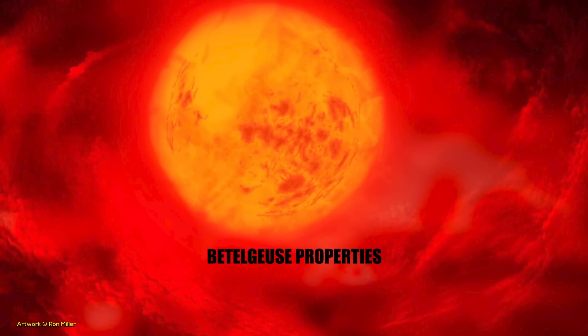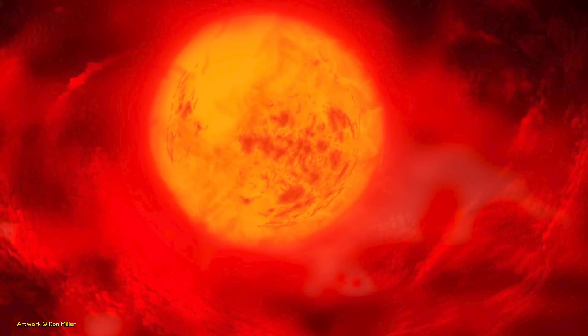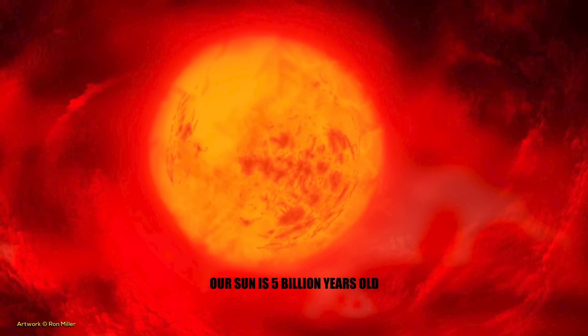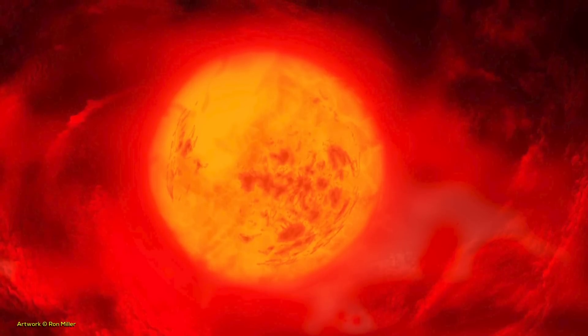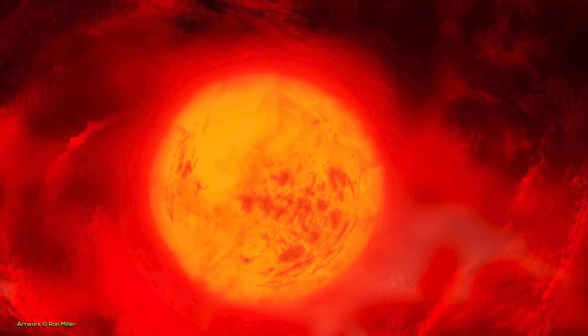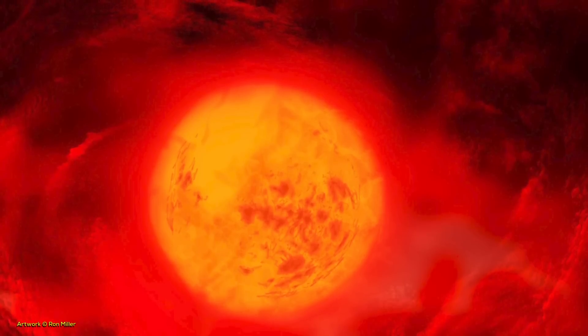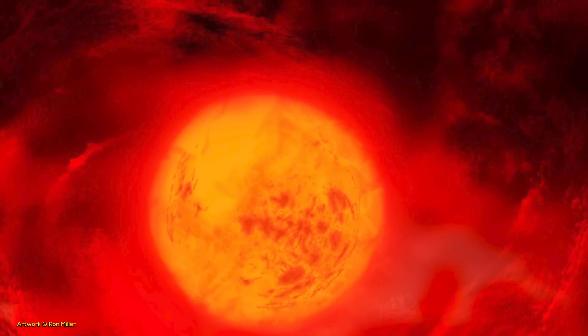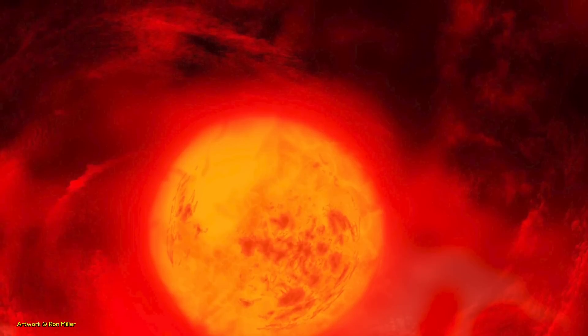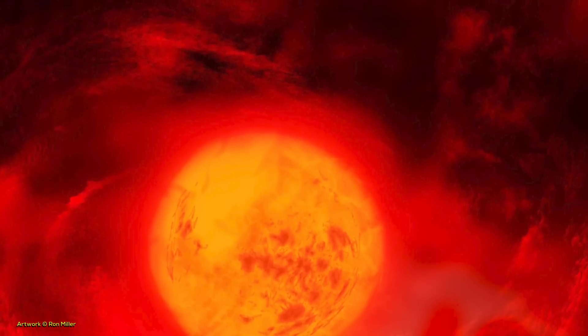Betelgeuse is a relatively young star, only 10 million years old. In comparison, our sun is more or less 5 billion years old. But its youth does not imply that it will have a long life to live. Betelgeuse is very massive and burns its material so much faster than the sun. Meaning it is expected to die much sooner than the sun and is massive enough to turn it into a neutron star or black hole after its death.